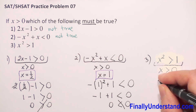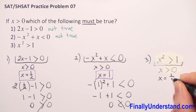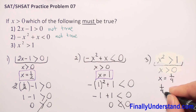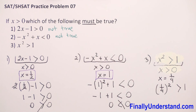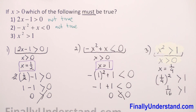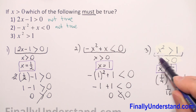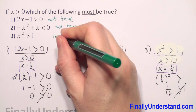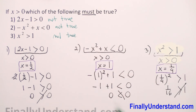Let's take x equal to 1/4. Substituting x by 1/4: we have 1/4 to the second power, which should be greater than 1. But 1/4 squared is 1/16, and 1/16 is not greater than 1 — it is less than 1. So this inequality is not true for x equal to 1/4. We found one example for which our inequality is not true, meaning this inequality is not true. This is my solution.